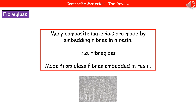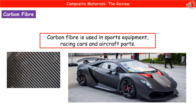Another common composite material these days is fiberglass. What we've done is take very thin glass fibers and embedded them within a resin to create fiberglass, which we can use to make things like canoes. We also have carbon fiber, which we tend to use in sports equipment, racing cars and aircraft parts, because it's very strong but also very lightweight.